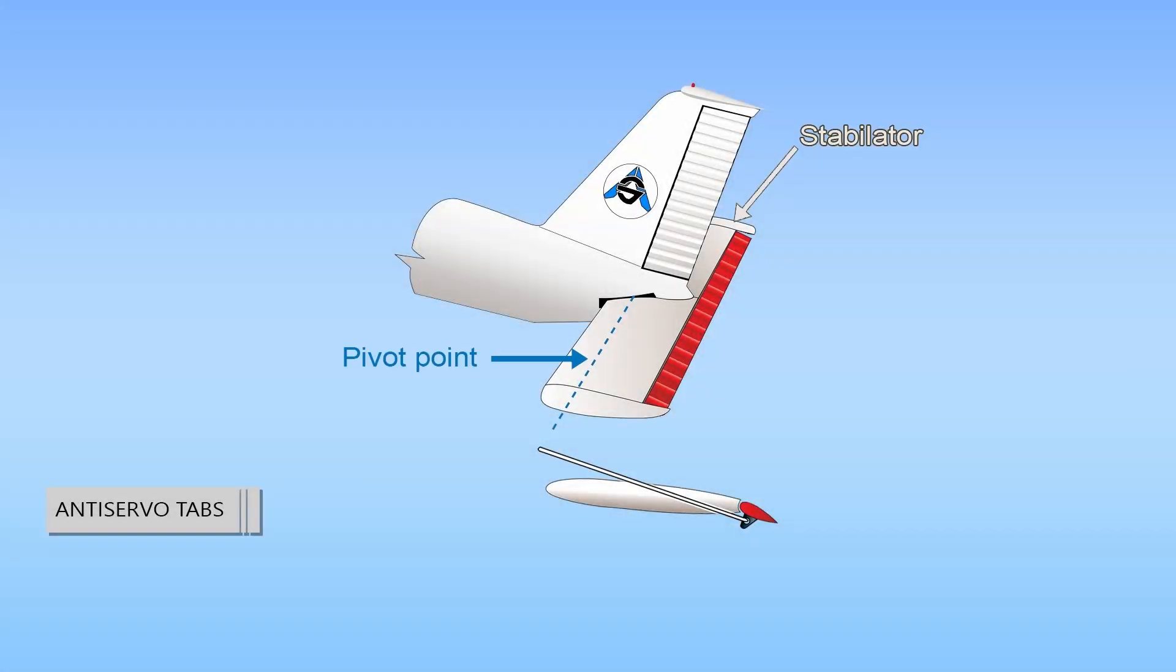Antiservo tabs work in the same manner as balance tabs except, instead of moving in the opposite direction, they move in the same direction as the trailing edge of the stabilator. In addition to decreasing the sensitivity of the stabilator, an antiservo tab also functions as a trim device to relieve control pressure and maintain the stabilator in the desired position.